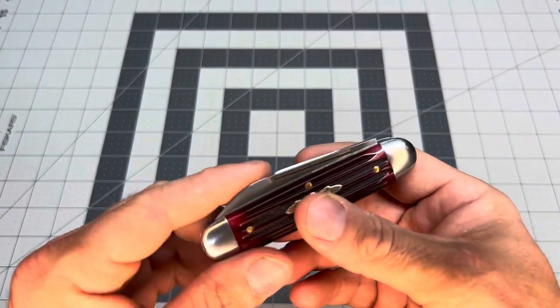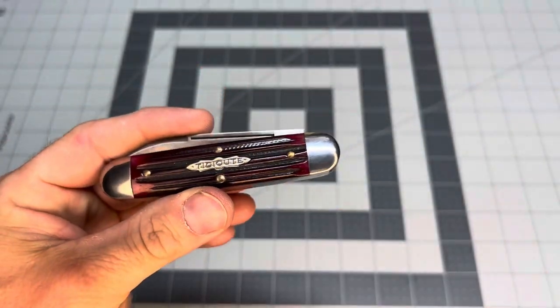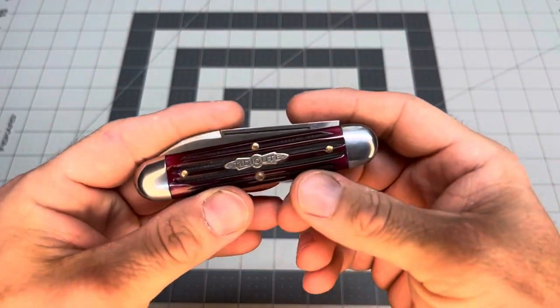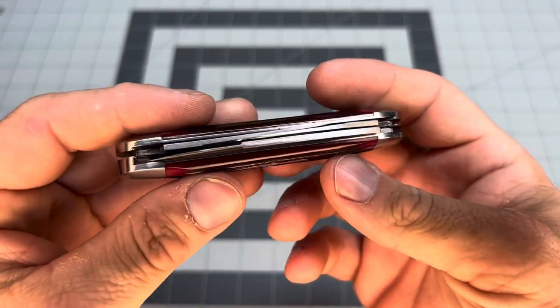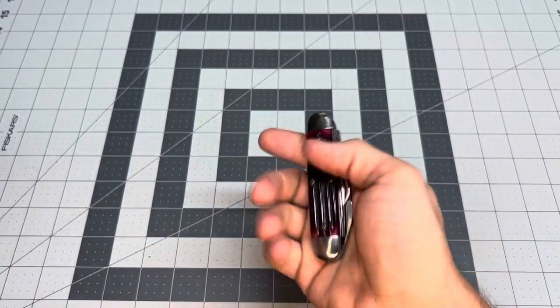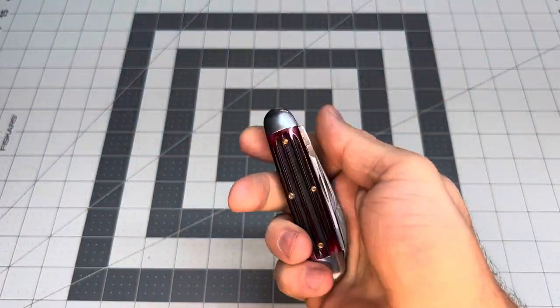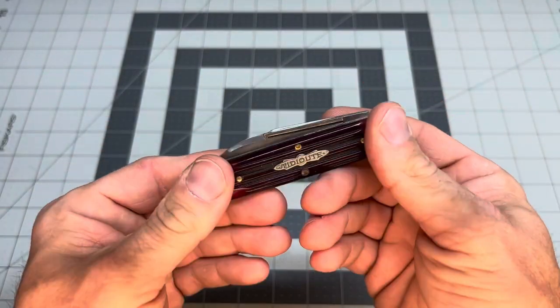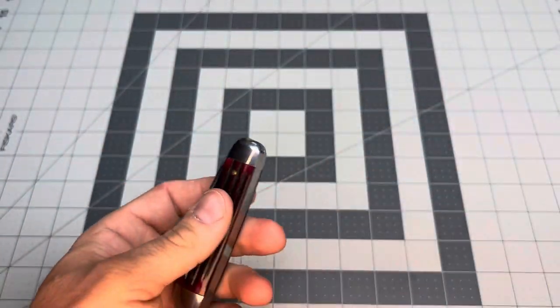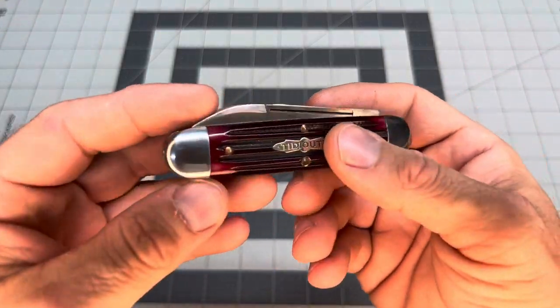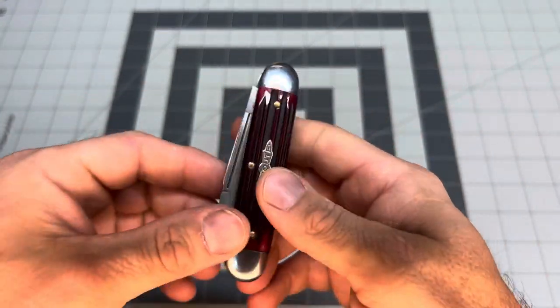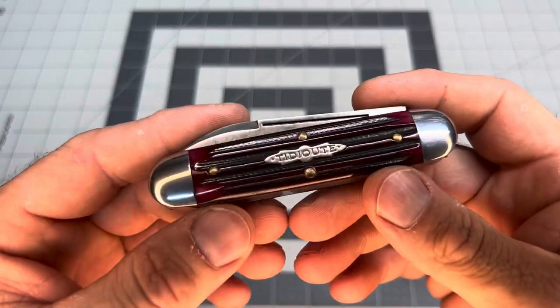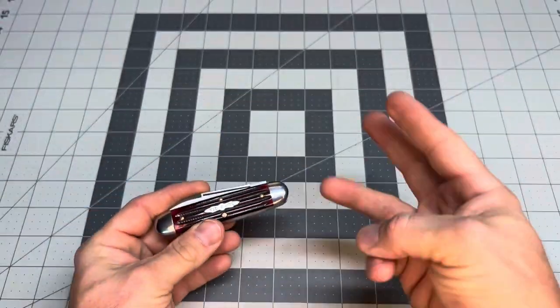And then the other con, which there's only three cons. Number one, nail nicks. Number two, the three blades make it kind of heavy. It's hefty, hefty, hefty, hefty. It weighs down your pocket. If you know what a guy's talking about, you know what I'm saying. And it's hard to find at a good price. That's number three.